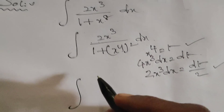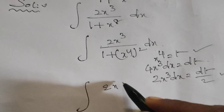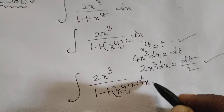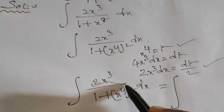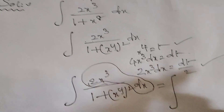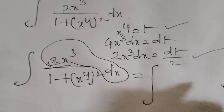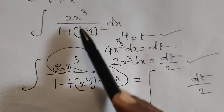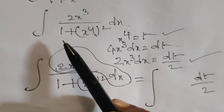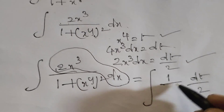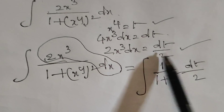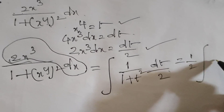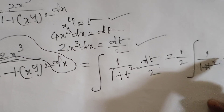Substituting into the given problem: integral of 2x cubed by 1 plus x to the power 4 whole square dx equals integral of dt by 2, multiplied by 1 over 1 plus t squared. Since 1 by 2 is a constant, we write this as one half times integral of 1 over 1 plus t squared, dt.